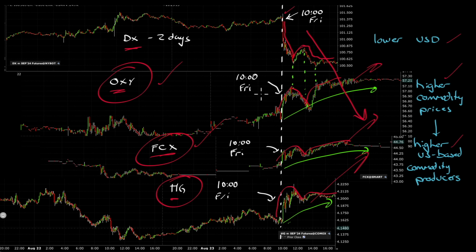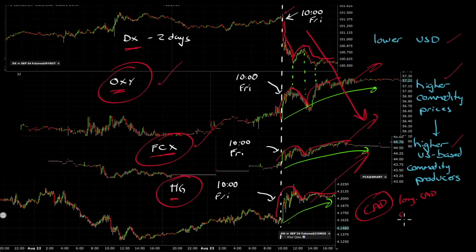I have puts on Oxy but no long position. I am long Freeport and have puts on Freeport. I did have puts on copper but closed those. A lowering of the U.S. dollar has helped all of those positions and is helping Freeport nicely. If there's continued decline in the U.S. dollar, I'm in the right places already. Not only that, I do have lots of exposure to Canadian apartment REITs, so I am long the Canadian dollar by definition. Since I need U.S. dollars now more than Canadian dollars, I am inherently short the U.S. dollar.